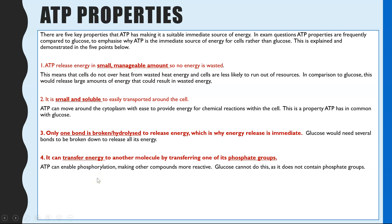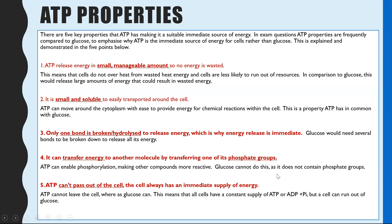Fourth is phosphorylation: when you hydrolyse the bond between the phosphate groups, the inorganic phosphate can be bonded onto a new molecule to make it more reactive — something you cannot do with glucose. Finally, ATP cannot pass out of a cell; it cannot diffuse through the cell surface membrane and there are no protein carriers for it. So every cell has its own supply of ATP or ADP and Pi, whereas glucose can move in and out of cells through channel and carrier proteins, meaning a cell can run out of glucose but will always have ATP or ADP and Pi available.